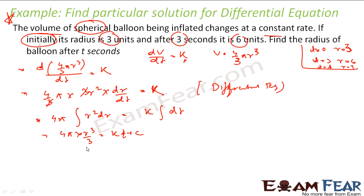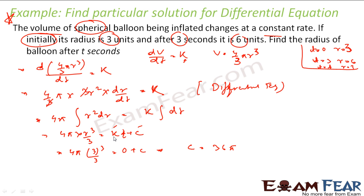Putting t = 0, r = 3: 4π · (3³/3) = 0 + c, which gives 4π · 9 = c, so c = 36π. Now putting t = 3, r = 6: 4π · (6³/3) = 3k + 36π. This means 4π · 72 = 3k + 36π, giving 288π = 3k + 36π.